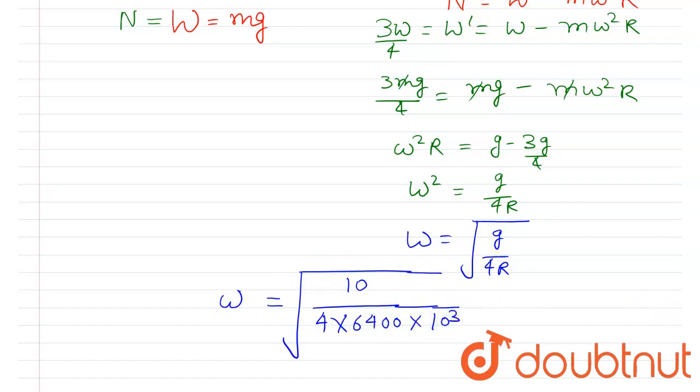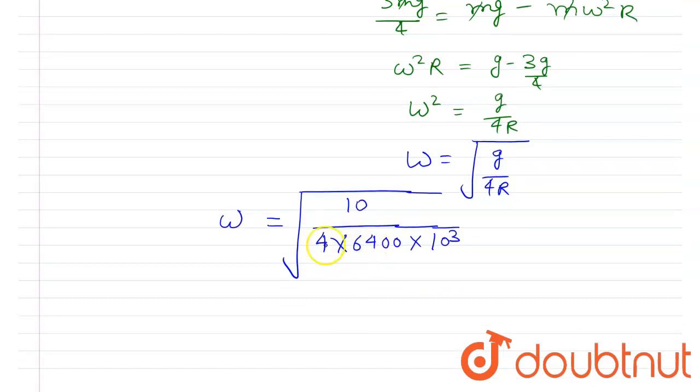Right, so this will be 64 times 4. So after taking the root you will get 1/160, and this zero will get canceled out, and you will get 10⁻⁴.